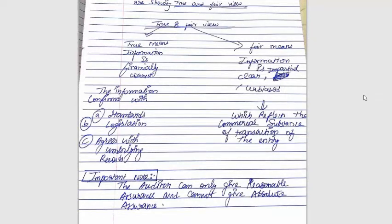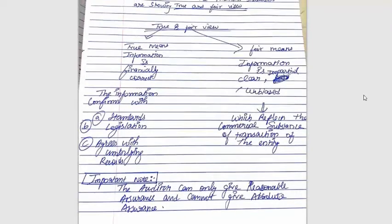One important note: however hard the auditor tries to give a true and fair view, the auditor is also a human being — not a robot. So the auditor can only give reasonable assurance, which means less than 100% assurance. The auditor cannot give you absolute assurance — 100% certainty that all information in the statements is absolutely correct. The auditor can only give reasonable assurance, meaning less than 100% assurance.